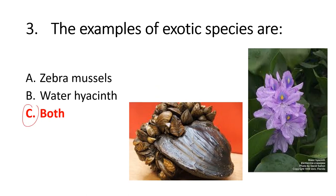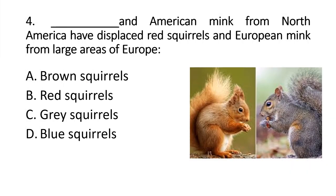Zebra mussels are known as an invasive exotic species. Question 4: An American mink from North America has displaced red squirrels, and European mink from large areas of Europe. The grey squirrel is from North America and the red squirrel is from Europe. When the grey squirrel was introduced into Europe, it replaced the red squirrel.